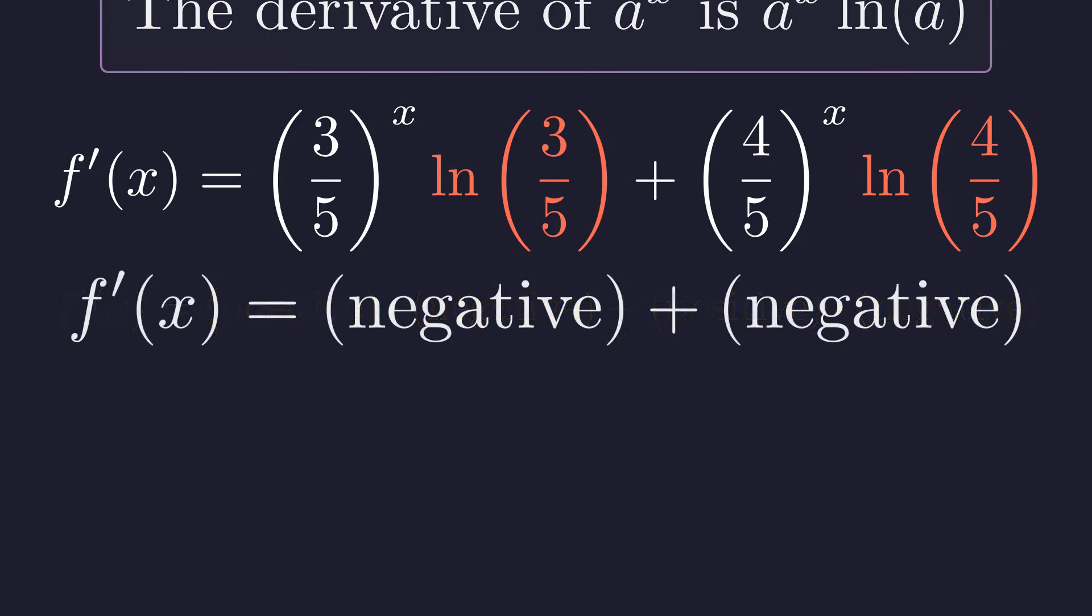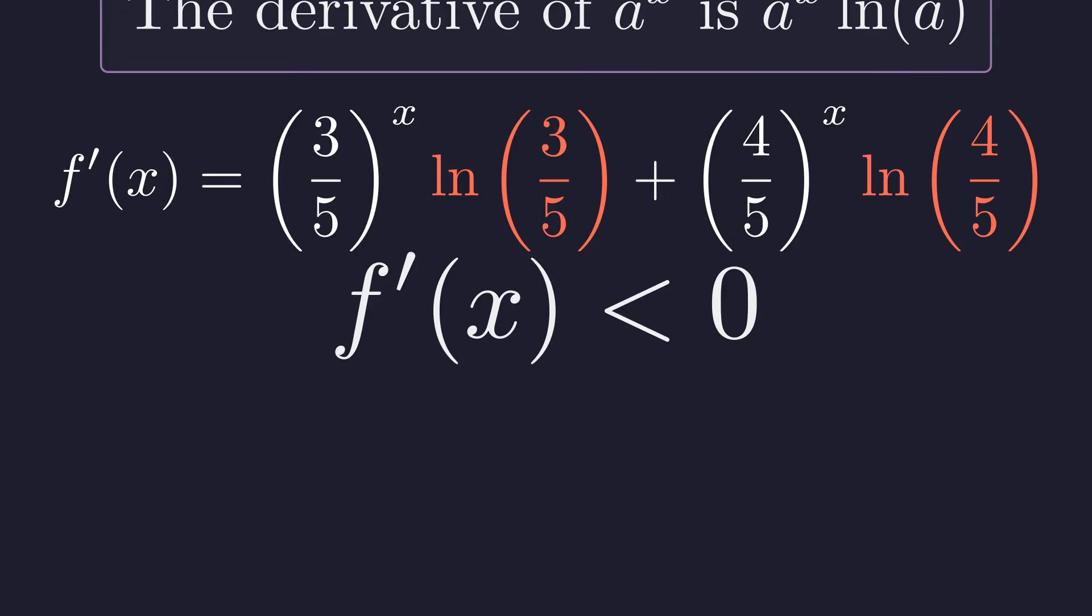A positive times a negative is always negative. This simplifies our expression to the sum of two negative quantities. The sum of two negative numbers is always negative. This proves that f prime is always less than 0 for any real value of x.